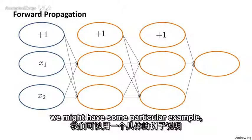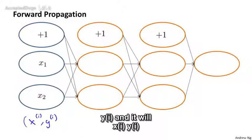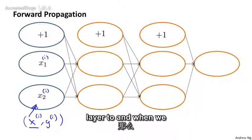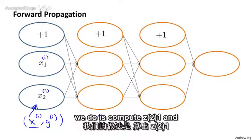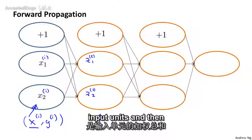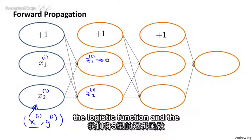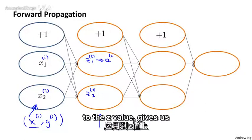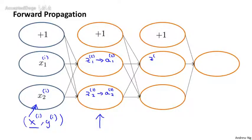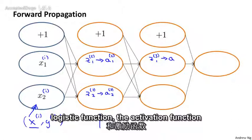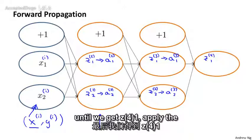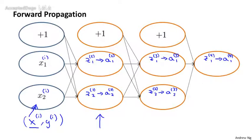When performing forward propagation, we might have some particular example xi, yi, and it would be this xi that we feed into the input layer — so xi1 and xi2 are the values we set the input layer to. When we forward propagate to the first hidden layer, we compute z21 and z22, the weighted sum of inputs. Then we apply the sigmoid activation function to get a21 and a22. We forward propagate again to get z31, apply the activation function to get a31, and so on until we get z41 and apply the activation function to get a41, which is the final output value of the neural network.